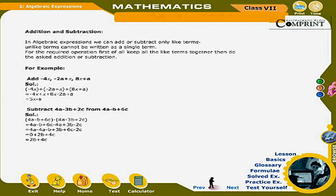Addition and Subtraction: In algebraic expressions, we can add or subtract only like terms. Unlike terms cannot be written as a single term. First, keep all the like terms together, then do the required addition or subtraction. For example, add −4x − 2a + x, 8x + a. Solution: −4x + (−2a) + x + 8x + a = (−4x + x + 8x) + (−2a + a) = 5x − a.